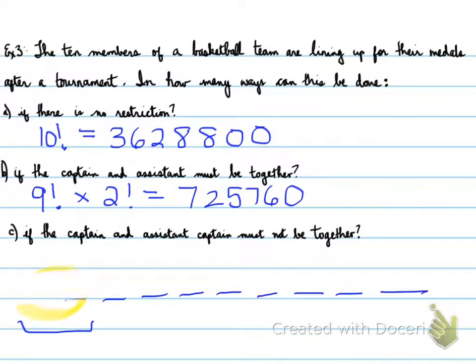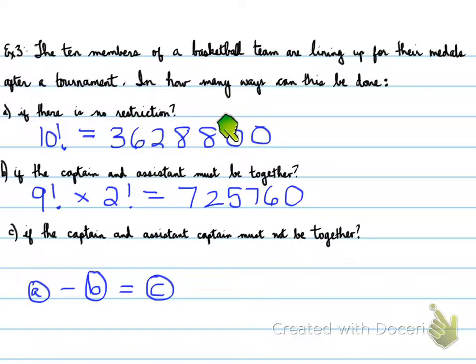Let's look at the last one, Part C. If the captain and assistant captain must not be together, what does that mean? That means we can't have them together. What's the opposite of can't? Can. So I know where they must be together. If they must not be together, that's right, it is taking the answer we got in A, which is the total possible ways, subtracting the answer we got in B. It's like the complement we talked about earlier. That will result in our answer for C. We take this 3 million number and subtract the 725,000 number and we get our answer. I'm going to leave that to you. I'm pretty sure you could figure this one out.